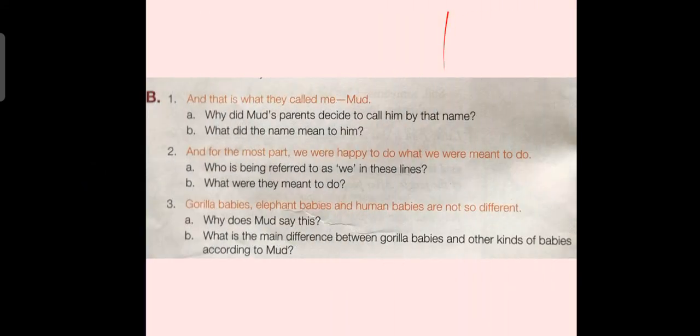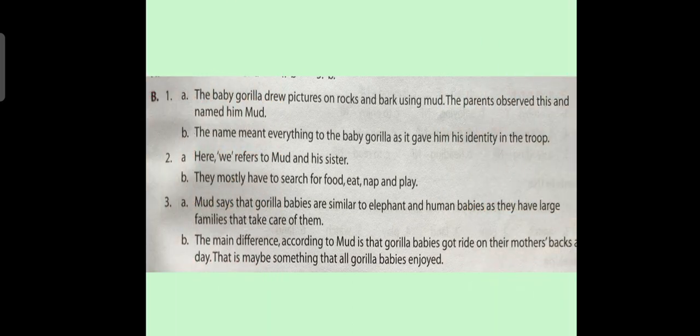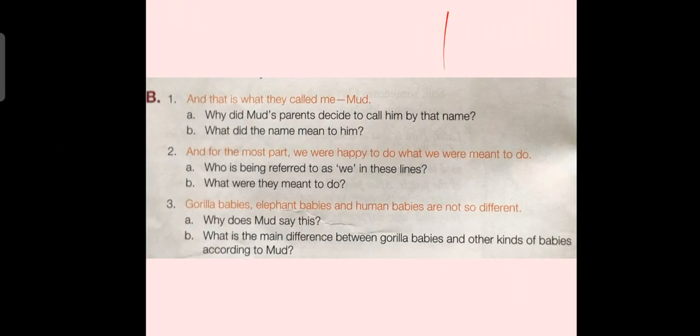Sentence No. 2: "And for the most part we were happy to do what we were meant to do." Question A: Who is being referred to as 'we' in these lines? Answer: Here 'we' refers to Mud and his sister. Question B: What were they meant to do? Answer: They mostly had to search for food, eat, nap and play.